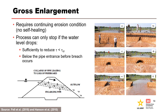Gross enlargement of a pipe or leak requires a continuing erosion condition with no self-healing. The process can only stop if the water level drops below the inlet of the developing pipe before breach occurs, or the water level drops sufficiently to reduce the hydraulic shear stress below the critical value. The photographs on the right are from ARS field testing, and the videos were previously shown during the erodibility parameters presentation.